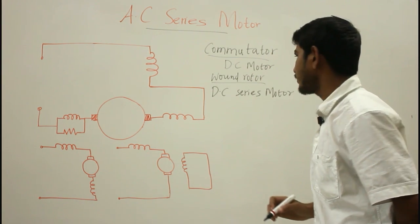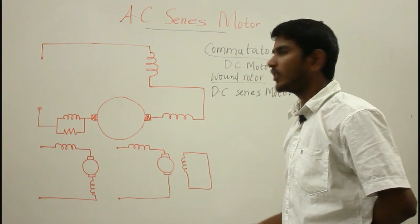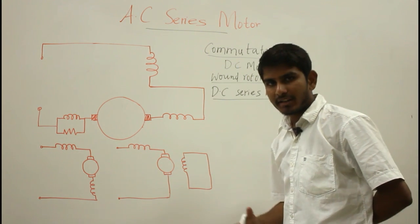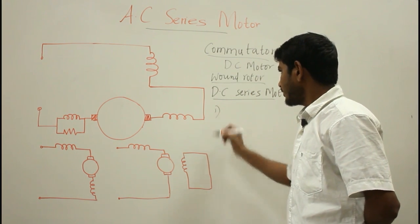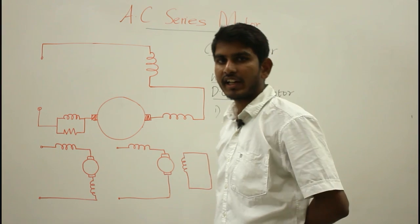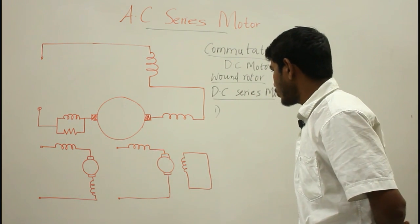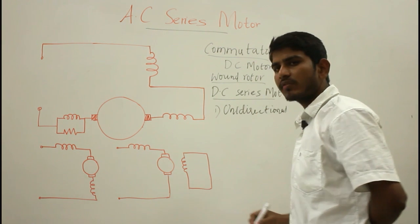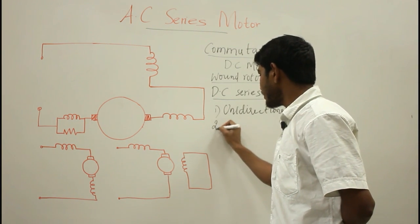Let us consider what happens when we provide a single phase AC supply to a DC series motor. In a DC series motor, when the field current and the armature current reverse at the same time, we have a unidirectional torque. So applying single phase AC supply to a DC series motor results in unidirectional torque because both armature and field currents reverse simultaneously.